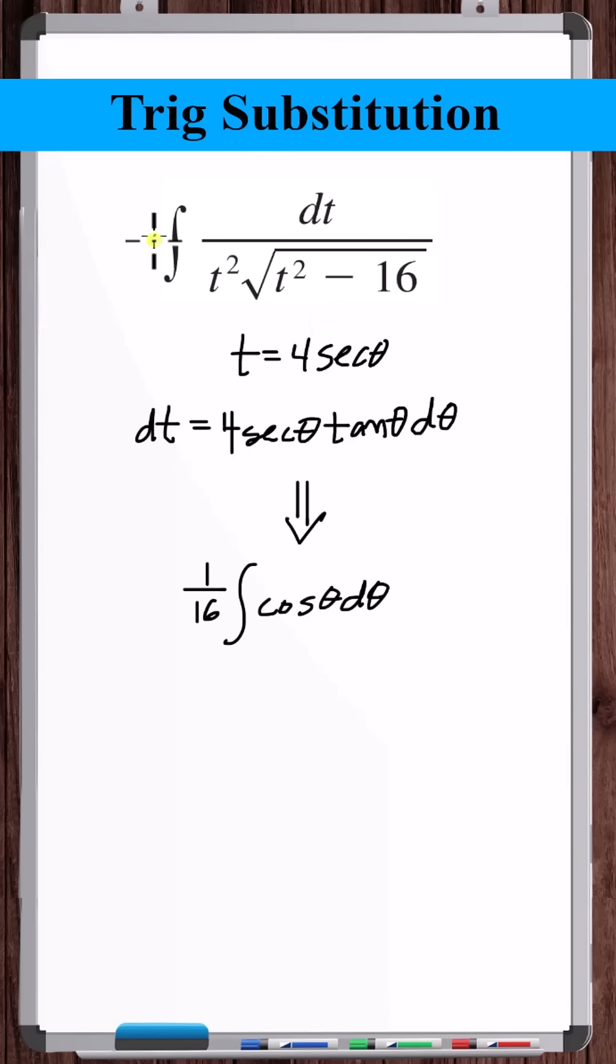In a previous video, to solve this integral, we recognized an expression of the form variable squared minus constant squared, in particular under a square root.